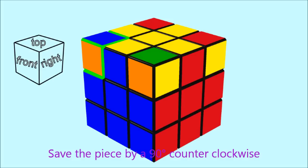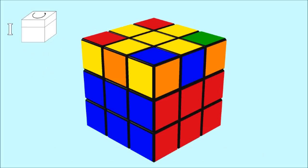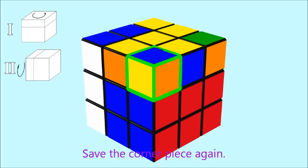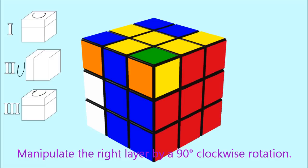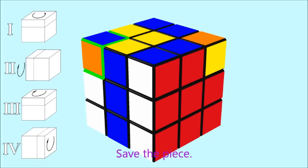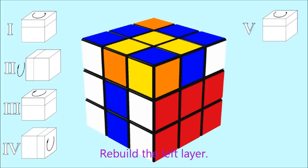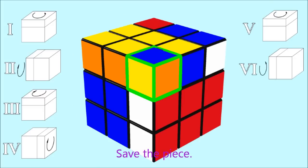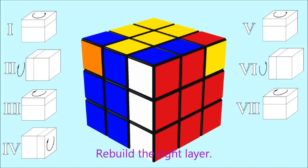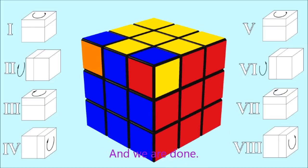Save the piece by a 90 degrees counterclockwise rotation of the top layer. Manipulate the left layer first by a 90 degrees counterclockwise turn. Save the corner piece again. Manipulate the right layer by a 90 degrees clockwise rotation. Save the piece. Rebuild the left layer. Save the piece. Rebuild the right layer. And we are done.